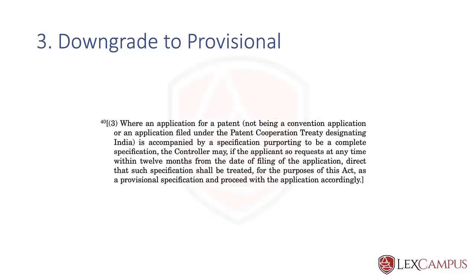A convention or PCT application can only be filed with a complete. So if a specification purporting to be a complete specification is filed, the controller may allow, at any time within 12 months, to downgrade it — or, as the act uses the word, 'direct' — that such specification shall be treated as a provisional. The downgrading can be done within 12 months of filing the application.